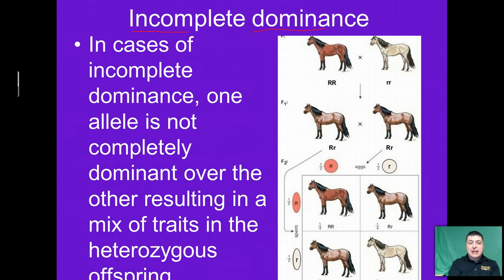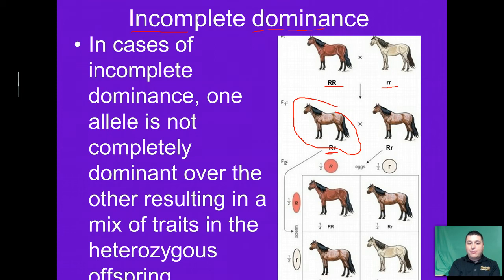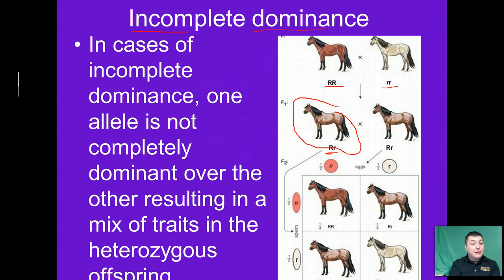One place where we see this is in horses. Here we've got a deep brown color and a cream color — pure brown with pure cream. When they come together, it yields what we call palomino, where the brown is not completely dominating the cream and some of the cream is showing through. If Mendel had observed this, he might not have been able to disprove the idea of blending theory because it looks like things are blending, but they're not.